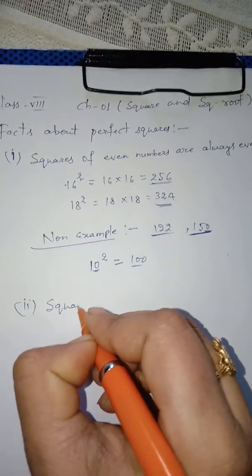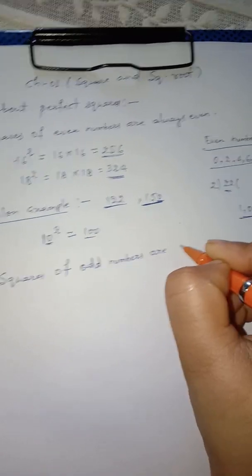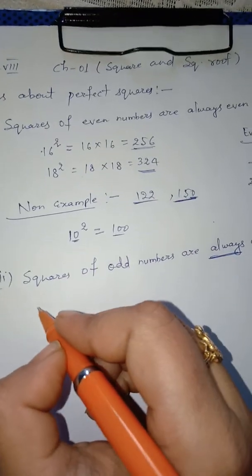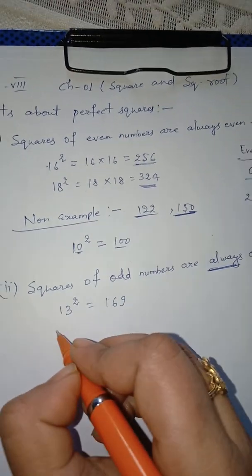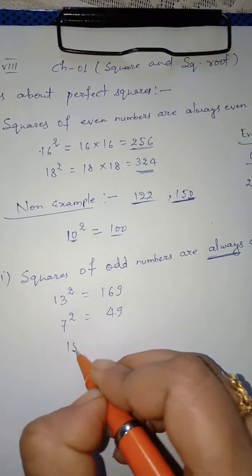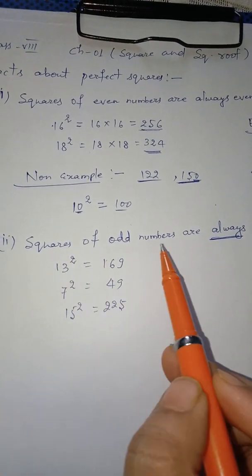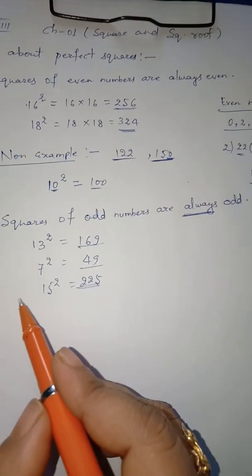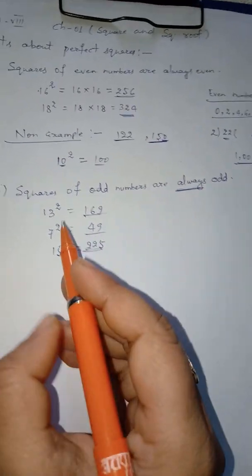The second fact is: squares of odd numbers are always odd — in any condition. If we find squares of odd numbers: 13 squared equals 169, 7 squared equals 49, 15 squared equals 225. This fact is correct — squares of odd numbers are always odd; it never gives an even number.